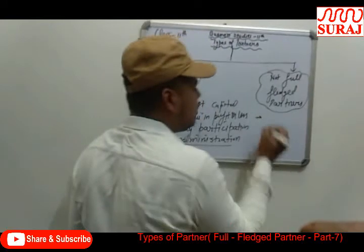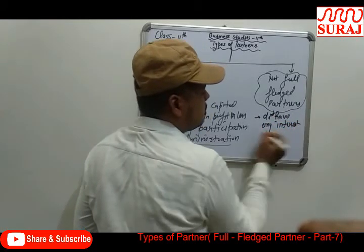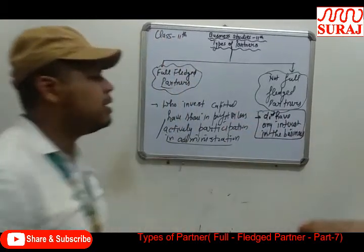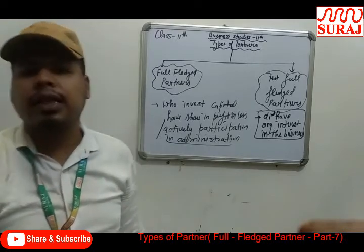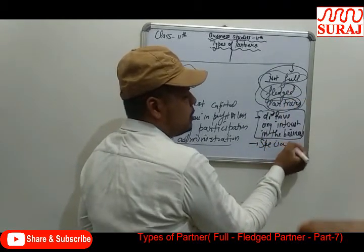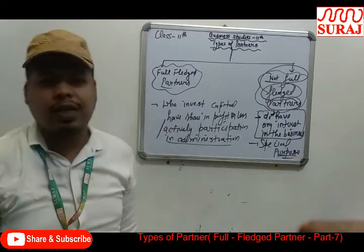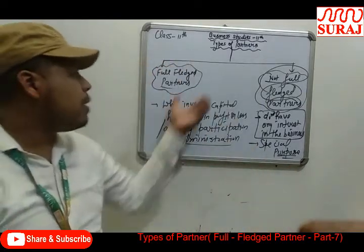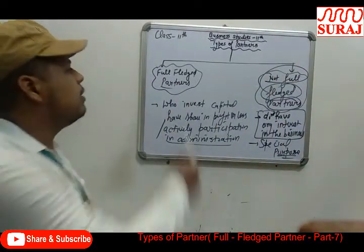Not full-fledged partners are those partners who do not have any interest in the business — no capital, no share in profit or loss, and no role in the administration of the business. The firm makes such a partner for a special purpose, and they are not a full-fledged partner.